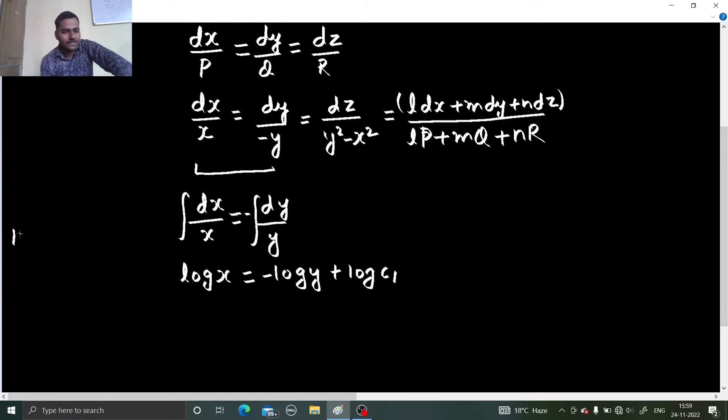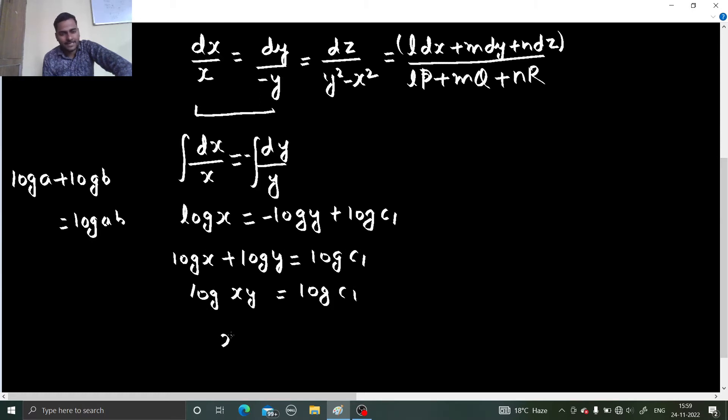Integration of dx by x is nothing but log x. Integration of dy by minus y is nothing but minus log y. You get a constant, name that also in terms of log, so that we can easily get a simple equation. Send this to the other side. So you get log x plus log y, giving you log c1. This gives you xy equals to c1. So this is the first one you got.